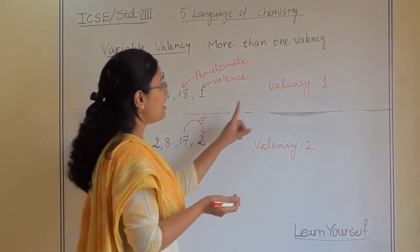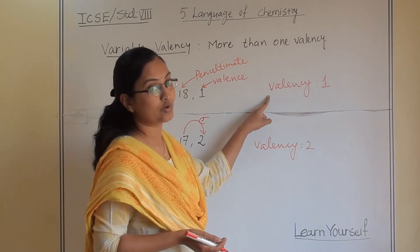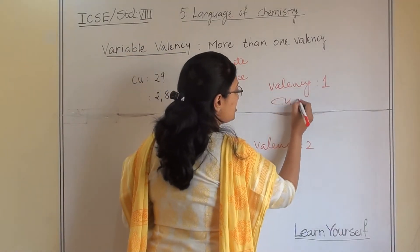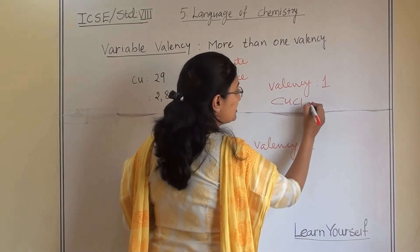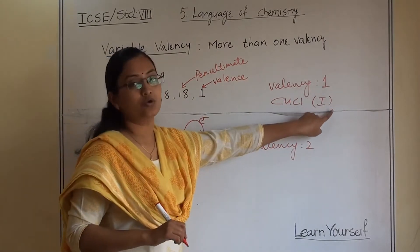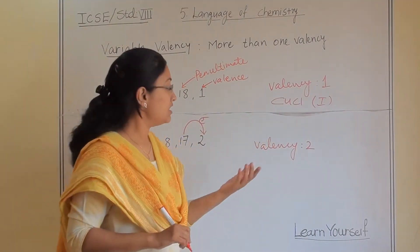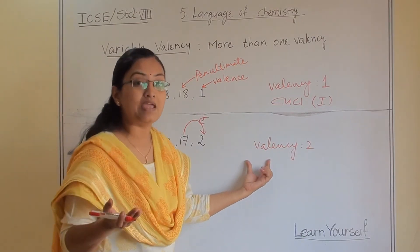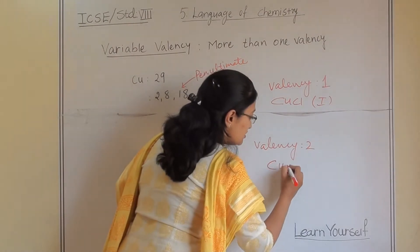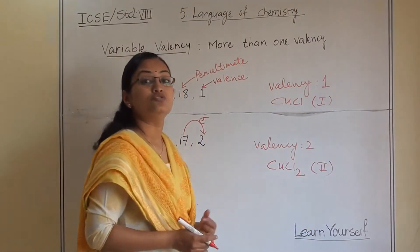So if copper makes a compound with chloride in the first valency, it will be CuCl — copper 1 chloride, because its valency is 1. But copper with valency 2 can also make a compound with chlorine, so it will be CuCl2 — copper 2 chloride.